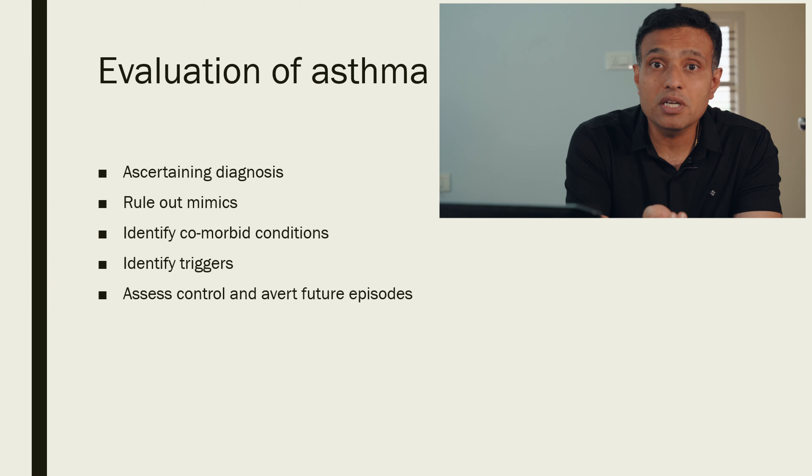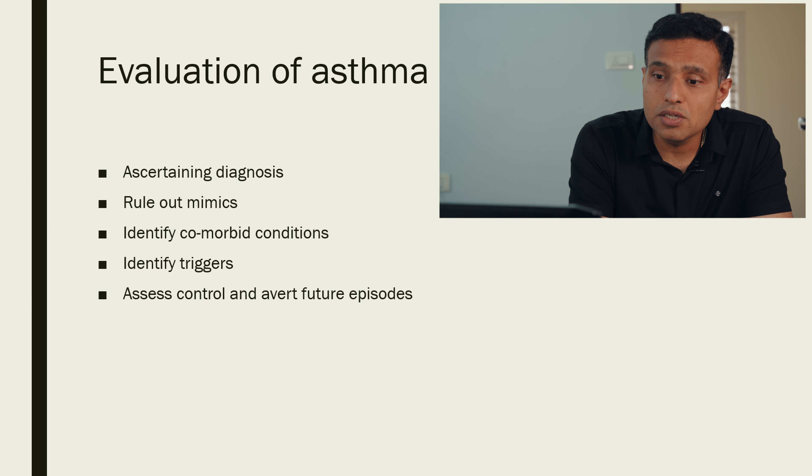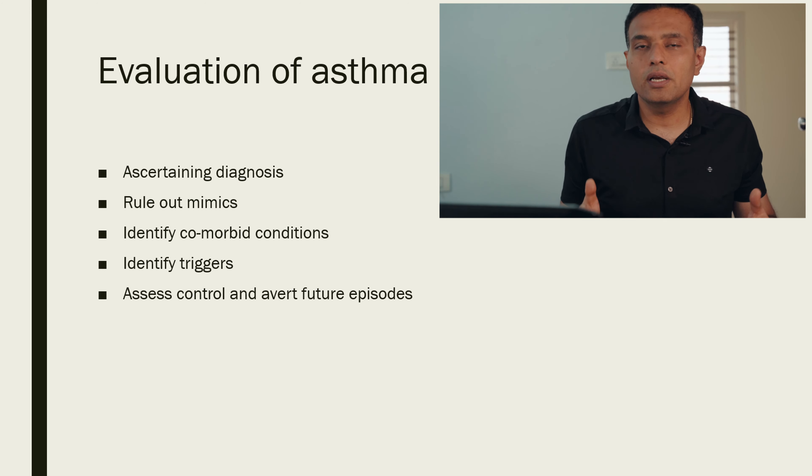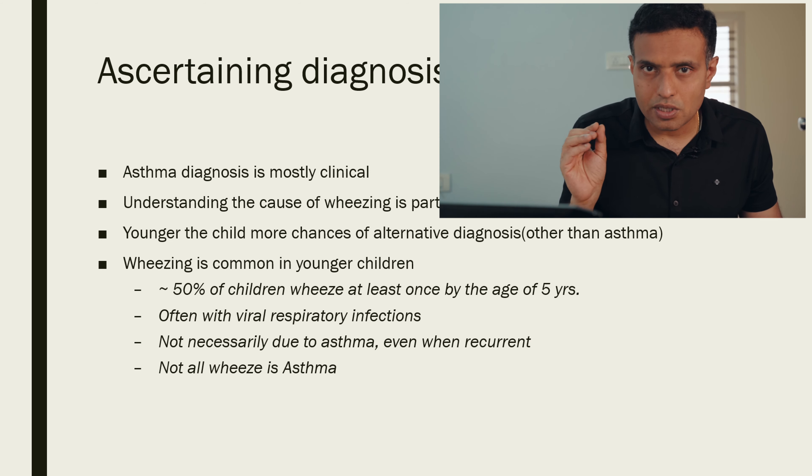The evaluation of asthma involves ascertaining the diagnosis, ruling out mimics, identifying co-morbid conditions, identifying triggers, assessing control, and averting future episodes. Asthma is fundamentally a clinical diagnosis — you take the history, observe the child over time, and then label the child accordingly.